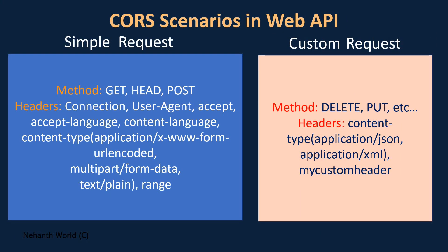Before understanding the three scenarios, we need to understand these two things: first one is the simple request and second one is the custom request. A request is a combination of different things like the method type, headers, URL, and payload — these are all part of a request.